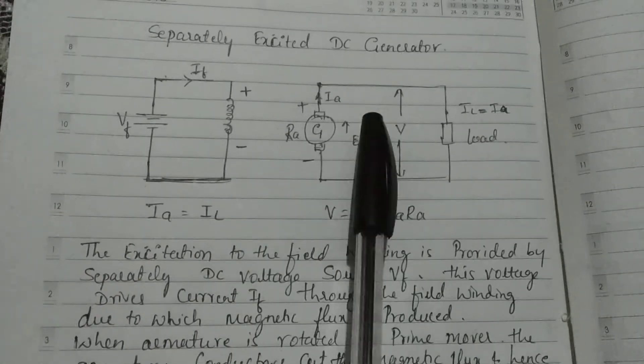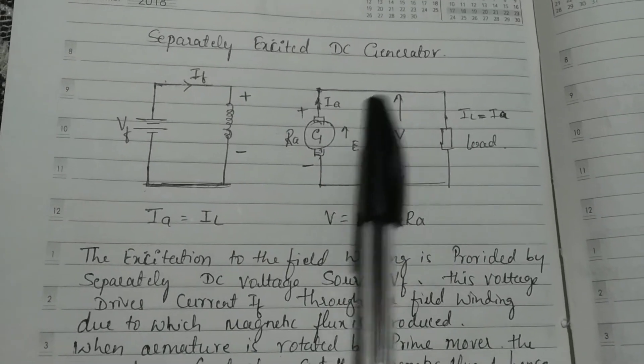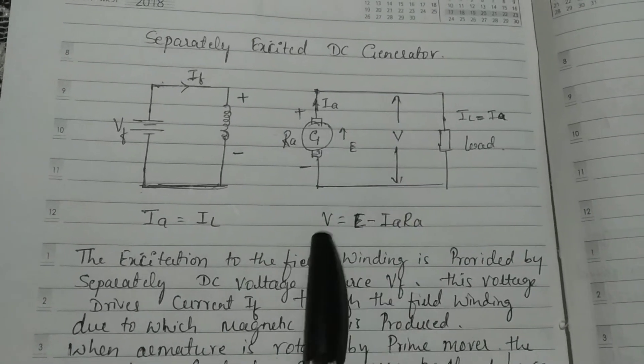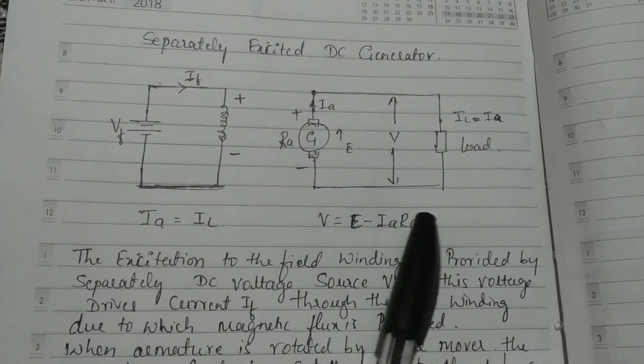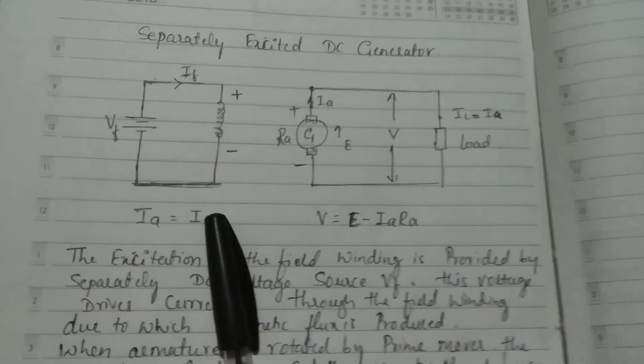And the EMF equation becomes: terminal voltage V equals E minus Ia into Ra. Thank you.